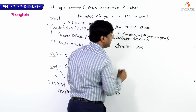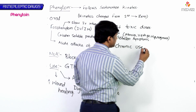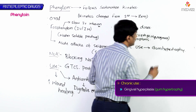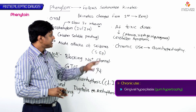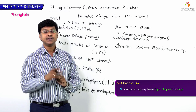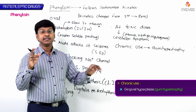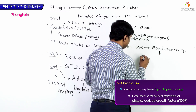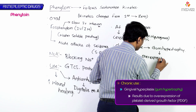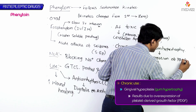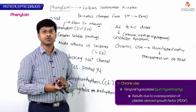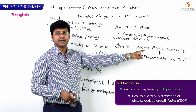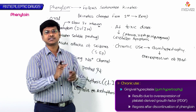Chronic use of phenytoin can result in gingival hyperplasia or gum hypertrophy, due to overexpression of platelet-derived growth factor (PDGF). This gum hypertrophy will regress after discontinuation of phenytoin.